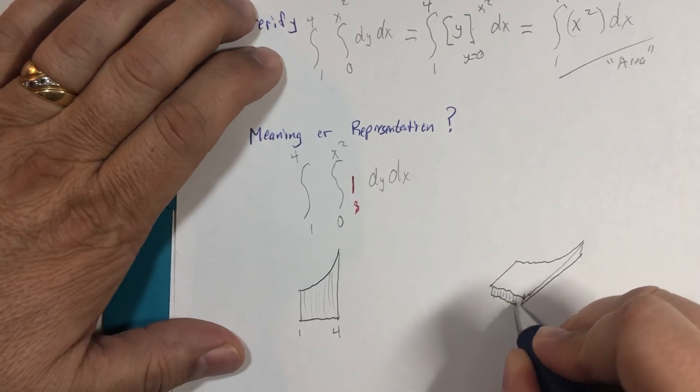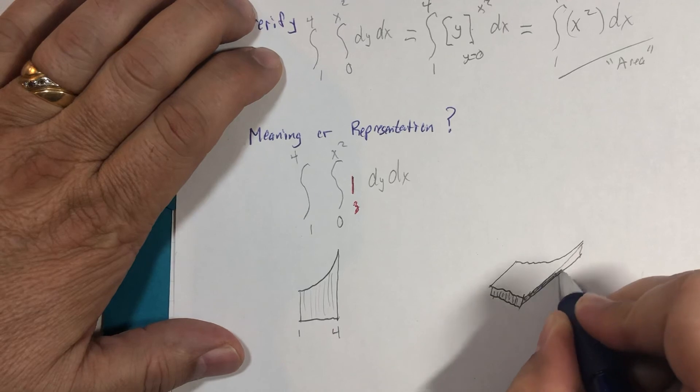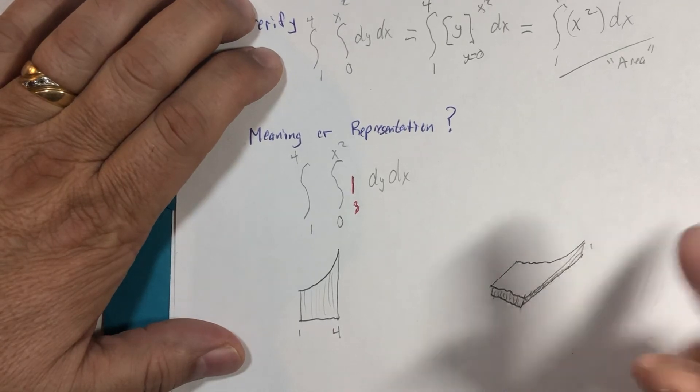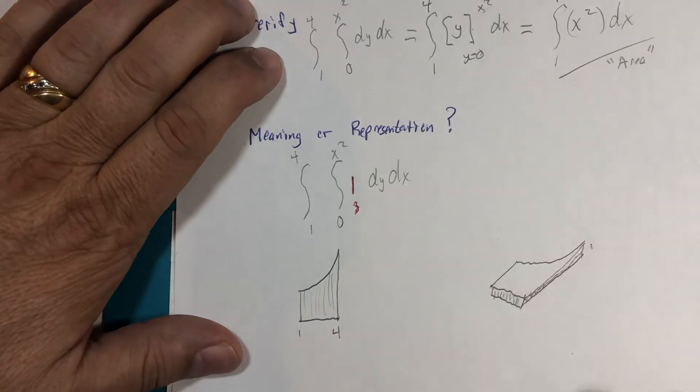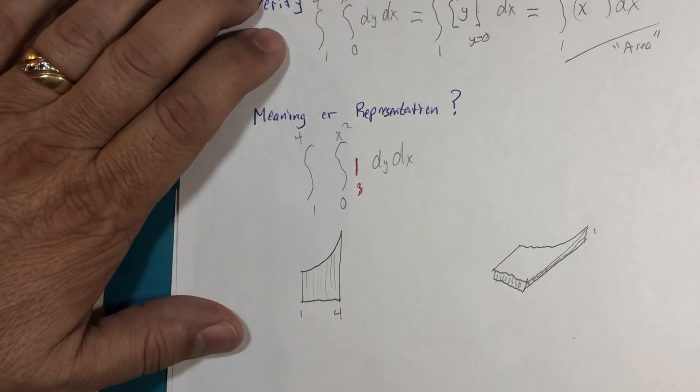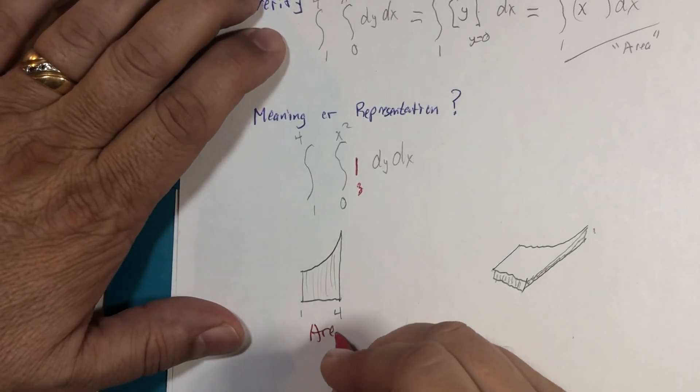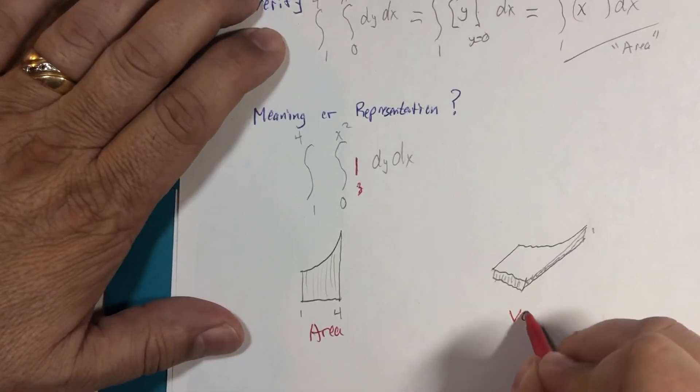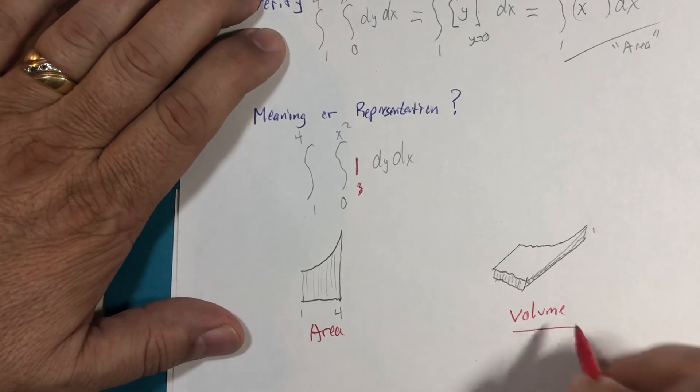Think of this as a little three-dimensional slab, but the height of the slab is one unit. And then suddenly, where this one is area calculation, this one is a volume calculation.